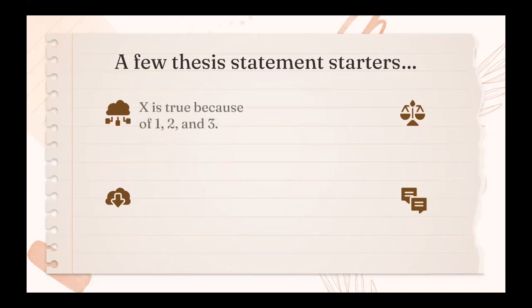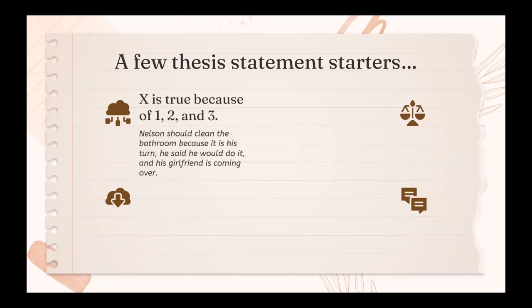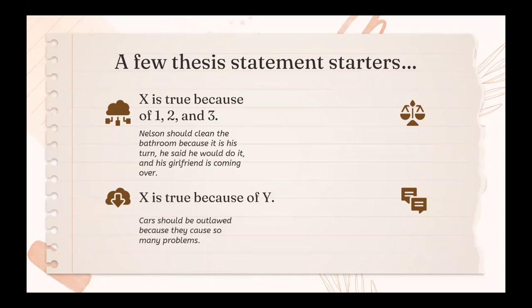The first format is 'X is true because of 1, 2, and 3.' For example: 'Nelson should clean the bathroom because it is his turn, he said he would do it, and his girlfriend is coming over.' You might have used this format for a five-paragraph essay because it lends itself well to three body paragraphs. Another variation is 'X is true because of Y' — for example, 'Cars should be outlawed because they cause so many problems,' and the body paragraphs would explore all those problems. Similarly, the first example could be simplified to 'Nelson should clean the bathroom,' and the body paragraphs would list the reasons why.